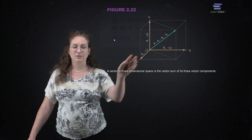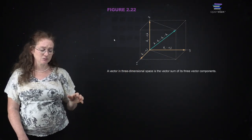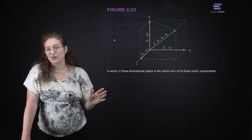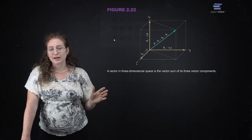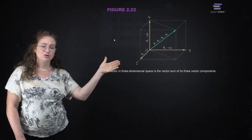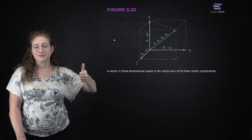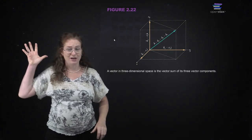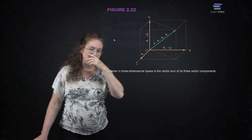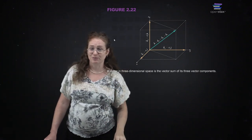In Cartesian coordinates we do x, y, and z. This is important: in physics we always use a right-handed coordinate system. In math they don't care, but in physics we always use right-handed coordinate systems. If you line your fingers up with the x axis and curl them towards the y axis, your thumb should point in the direction of the z axis - that's why it's called right-handed. Don't use your left hand, use your right hand. X to Y gives you Z.